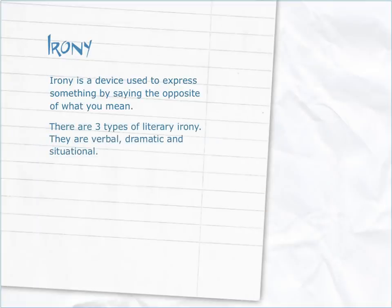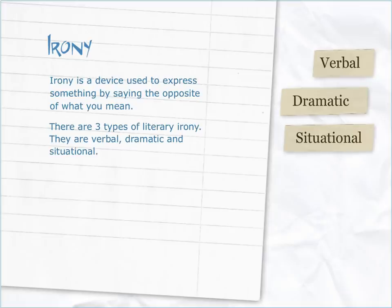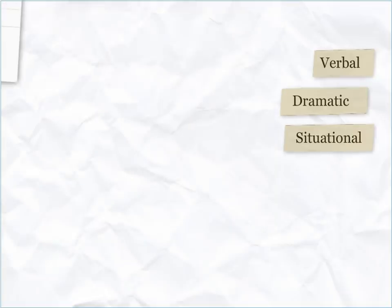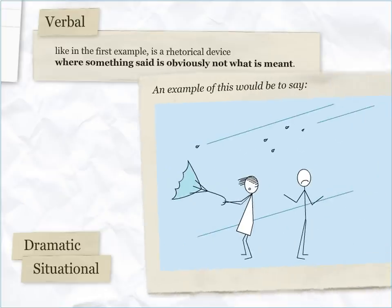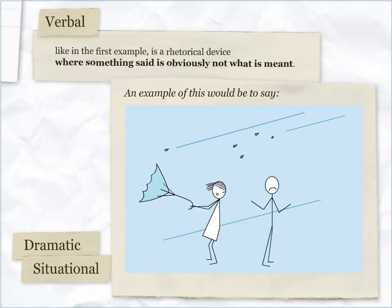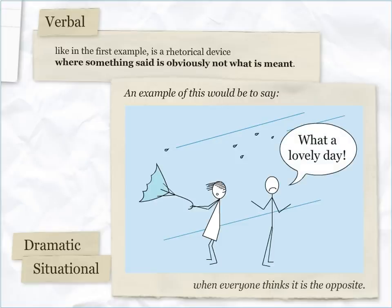There are three types of literary irony: verbal, dramatic, and situational. Verbal irony, like in the first example, is a rhetorical device where something said is obviously not what is meant. An example of this would be to say, 'What a lovely day,' when everybody thinks it is the opposite.